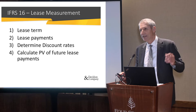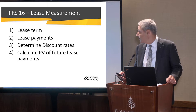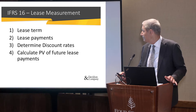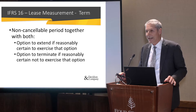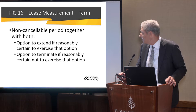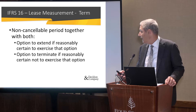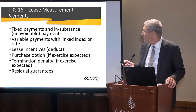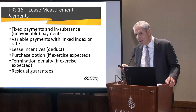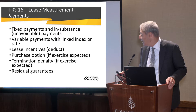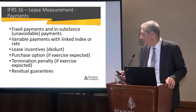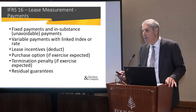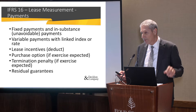For measurement — it sounds easy but gets more complex in the details. First you need a term, then your payments, a discount rate, and a net present value calculation. The term is the non-cancellable period, to which you add an extension period if there's relative certainty you'll extend, or subtract if there's a termination option expected to be exercised. On the payments side: fixed payments and in-substance or unavoidable payments, variable payments linked to an index, lease incentives which you deduct, purchase options if exercise is expected, termination penalties if expected, and residual guarantees — all of these build up the lease liability.